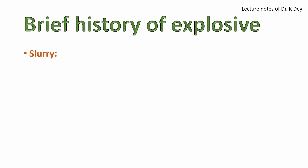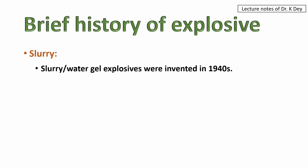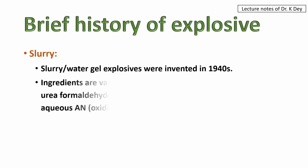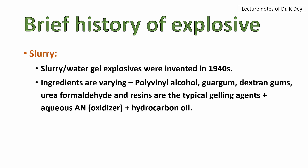Next is slurry, or water gel explosives, which were invented in the 1940s. The ingredients vary but typical gelling agents include polyvinyl alcohol, guar gum, dextran gums, urea, formaldehyde, and resins, plus aqueous ammonium nitrate as oxidizer and hydrocarbon oil.